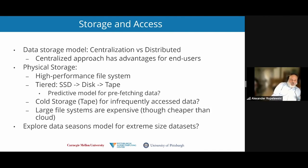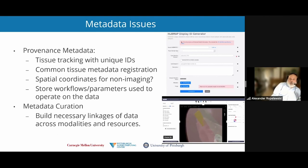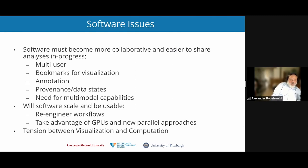When we get to really large data sets, can we explore data seasons such as used in the astronomy community, to keep these really large data sets available on fast storage for a certain period of time, with the rest of the time that data sitting on slower storage? Another issue is provenance metadata, and keeping track of that. As well as software — particularly collaborative functions need to be added. There's also the issue of scaling, and whether we'll need to re-engineer workflows to take advantage of GPUs and new parallel approaches.